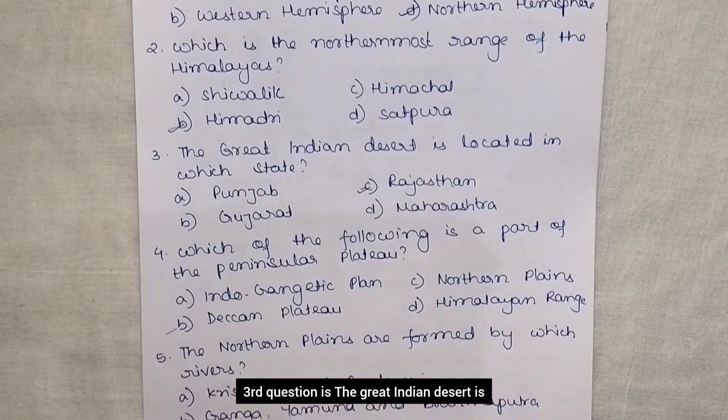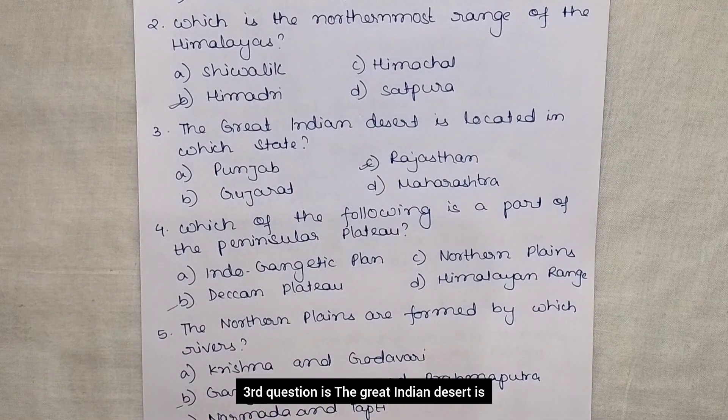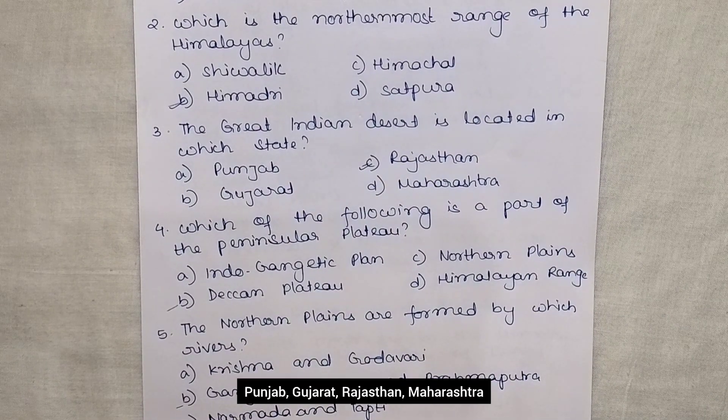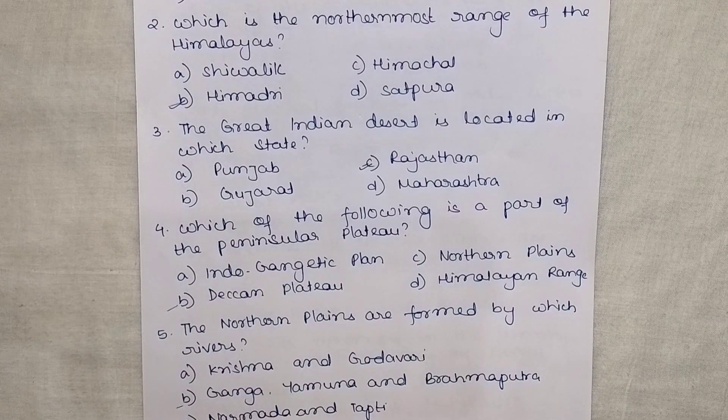The third question is: the great Indian desert is located in which state? The options are Punjab, Gujarat, Rajasthan, and Maharashtra. Answer is Rajasthan.